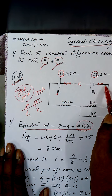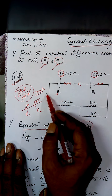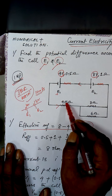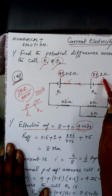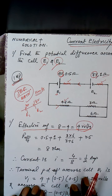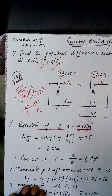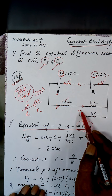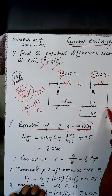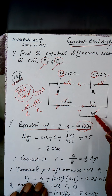The effective EMF is 4V. The internal resistance of E1 is 0.5Ω and of E2 is 1Ω. Since the same current passes through both, they are in series with each other. The same current also flows through the 4.5Ω resistor, so 4.5Ω, 0.5Ω, and 1Ω are all in series.